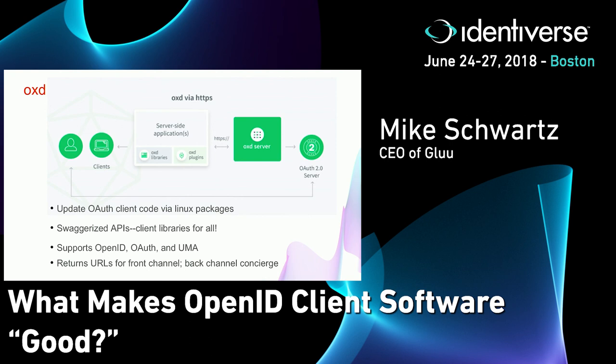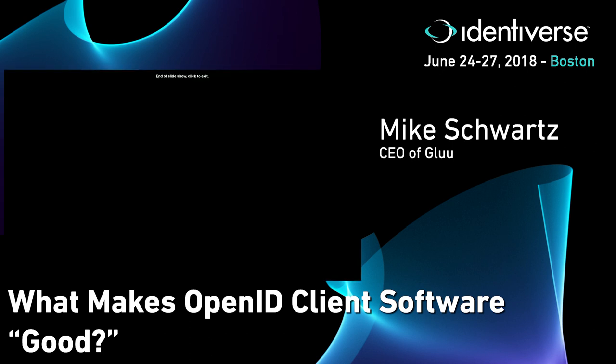OXD also has libraries for UMA and OAuth — for example, the client credential grant is an OAuth flow, not OpenID Connect, and we have built-in support for that. On the front channel, OXD just returns a URL. The authorization endpoint request has a million parameters — client ID, state which has to change every time, response types, and a lot more. OXD takes away some of that complexity by returning the full request URL to the client and saying 'send the user here.' OpenID Connect does have a lot of options.